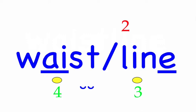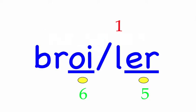Broiler. We need someone to come in and fix the broiler. First syllable: broi, three sounds, B-R-oy. Second syllable: ler, two sounds, L-ur. Broiler — mark the word.